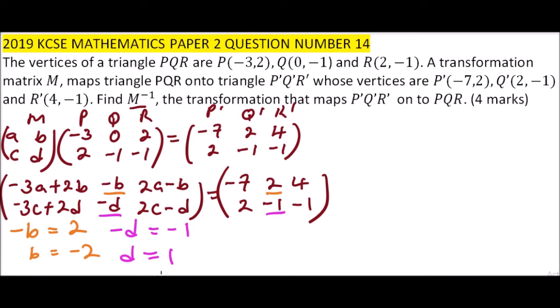We come and say we take this element here and say this 2C - D is the same as -1. But we already got D. So we can say 2C - 1 equals -1. If we take -1 to the other side, we have 2C. -1 becomes positive, so -1 + 1 equals 0, implying that C equals 0.